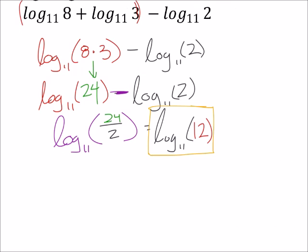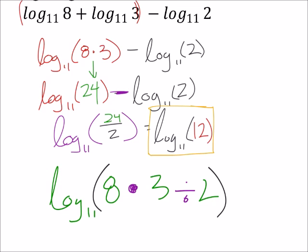So, if you guys saw that in the beginning, we could have combined this into one complete logarithm. So, we got the log base of 11, and then I can just use the operations as we go. The plus would be multiplication, and then the minus would be division. Then I just plug the values in, 8, 3, and 2. This also would give us this log base of 11 of 12.